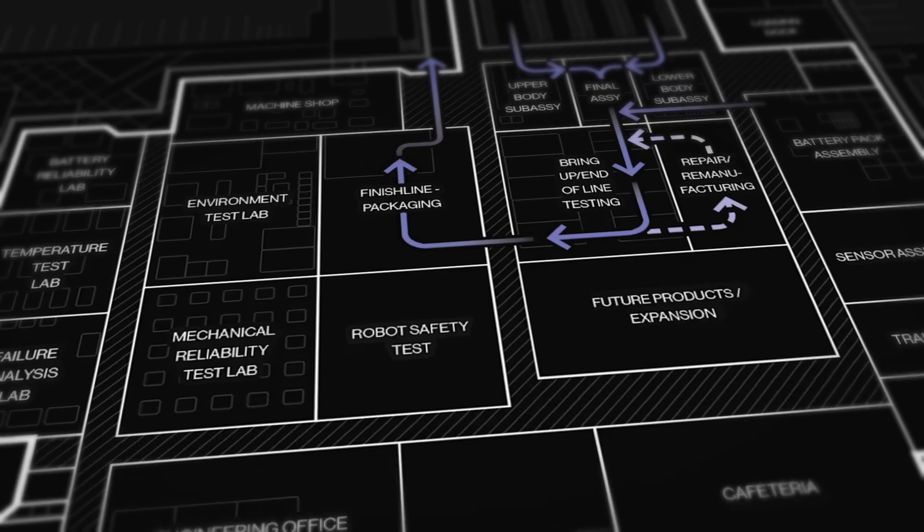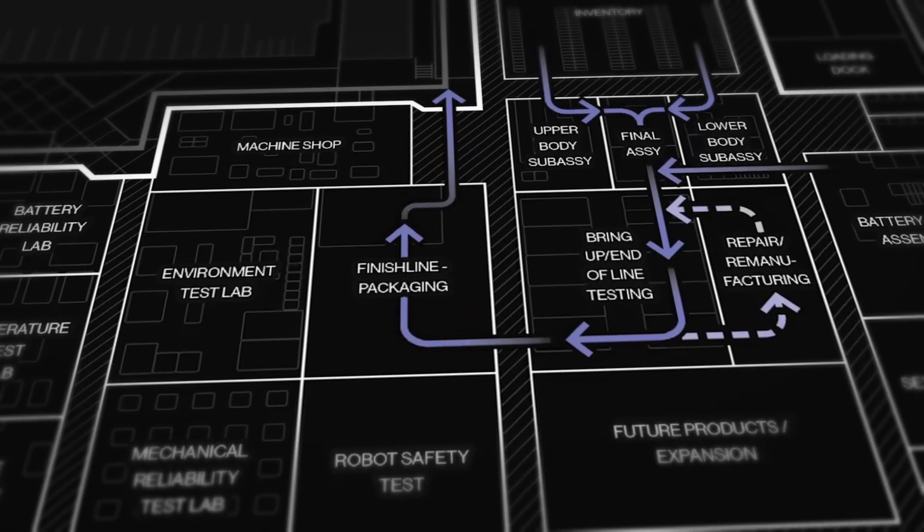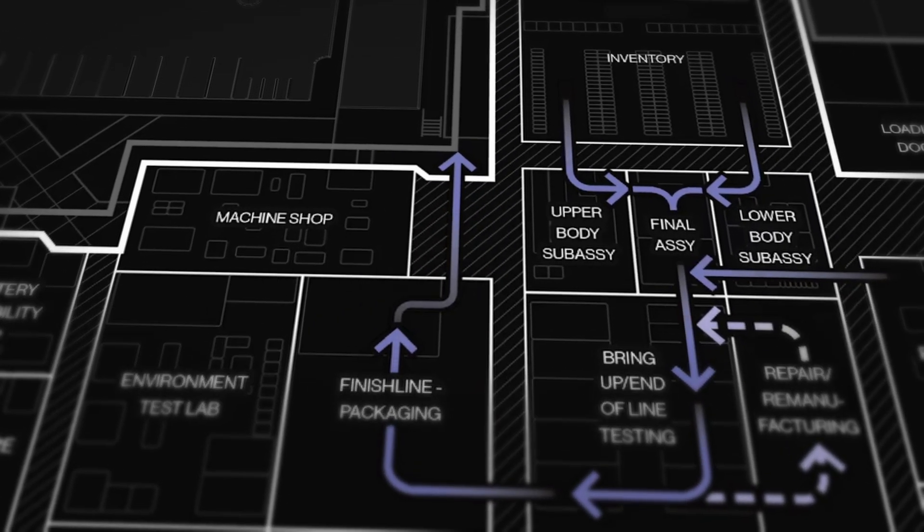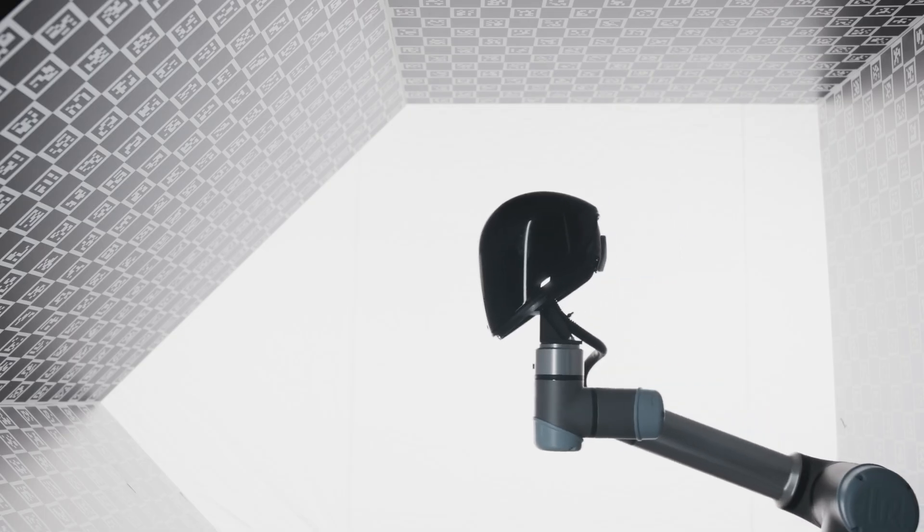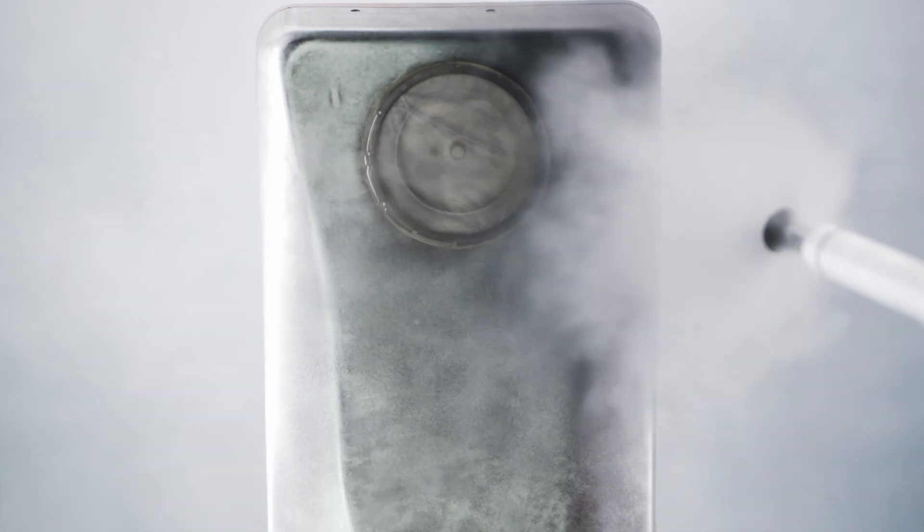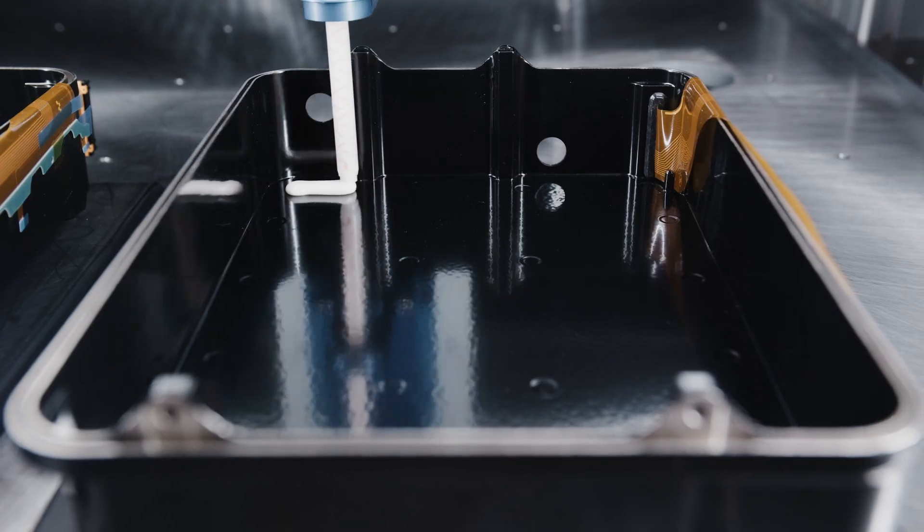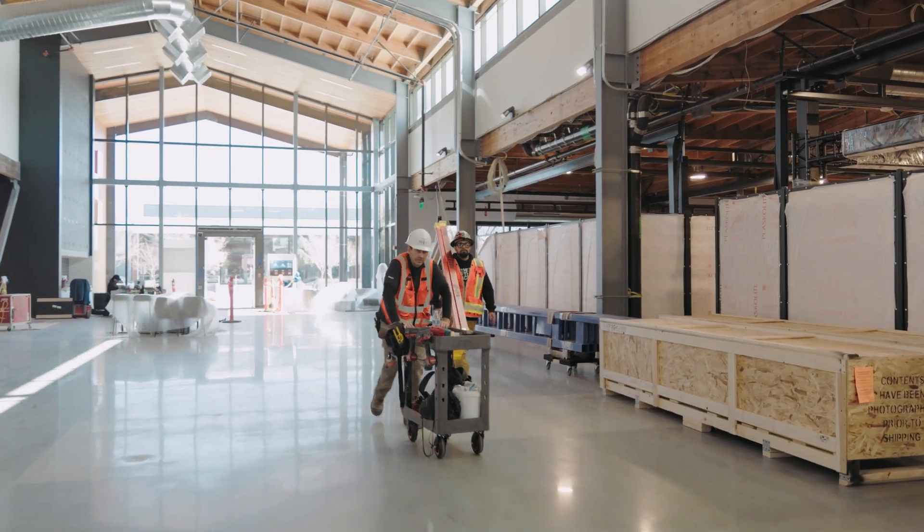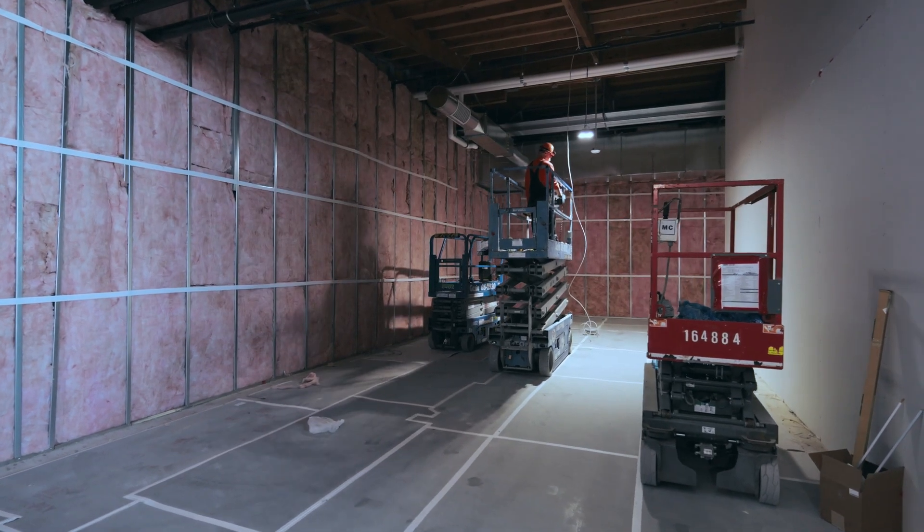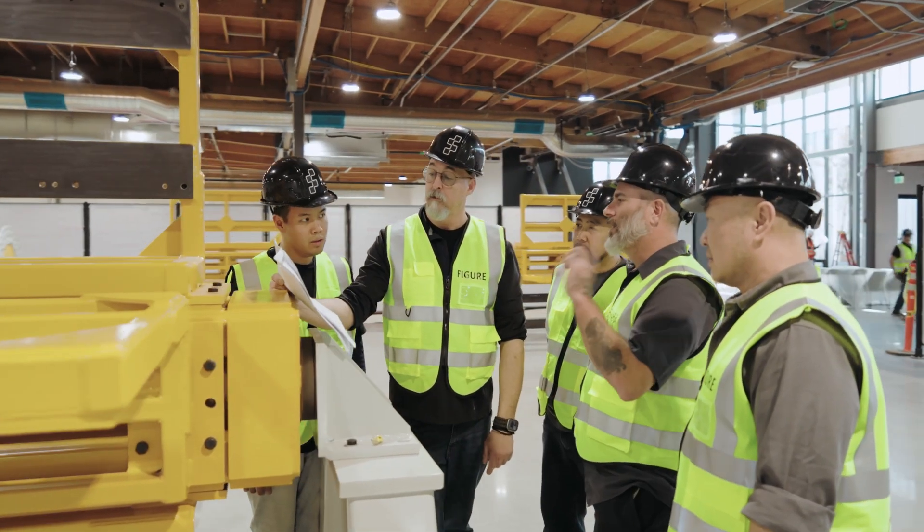At the center of all this is BotQ, Figure's own factory built to scale humanoid production fast. The first line can push out around 12,000 robots a year with a target of 100,000 within four years. Every step runs through a custom execution system that tracks parts, performance, and quality in real time. And because Figure builds its key modules in-house, they can tweak and improve without waiting on anyone else.